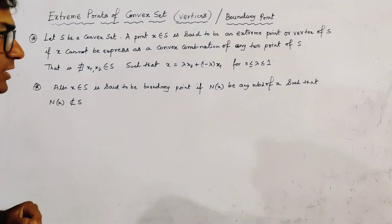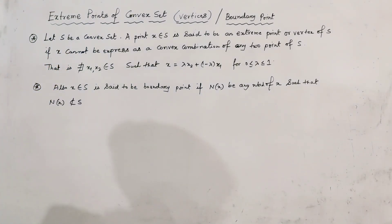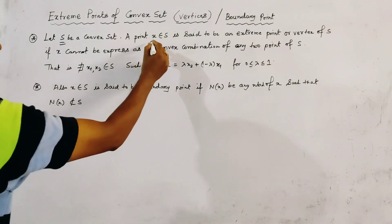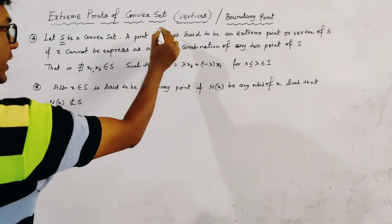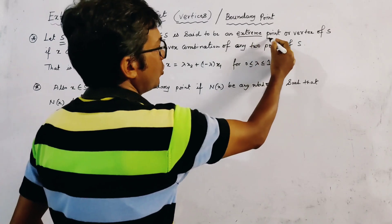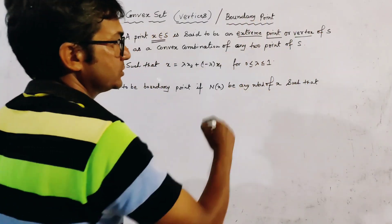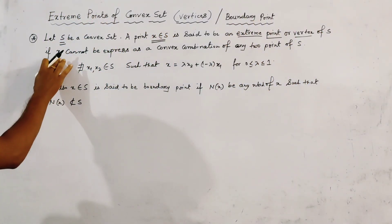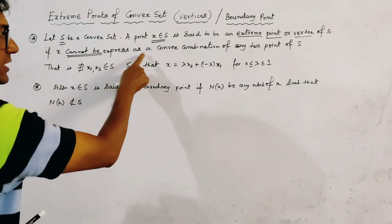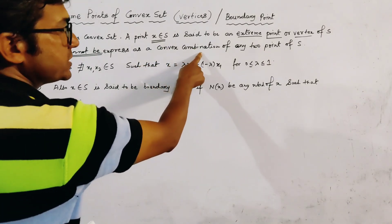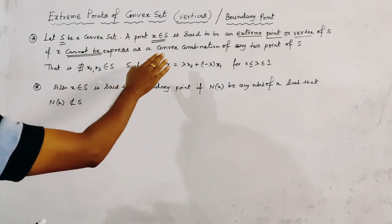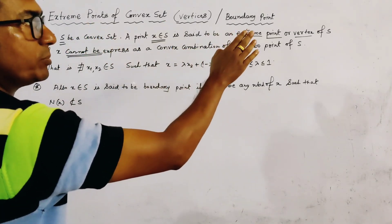We first see the definition of extreme point. Let S be a convex set and a point X which belongs to S. X is said to be an extreme point or vertex of S if X cannot be expressed as a convex combination of any two points of S.